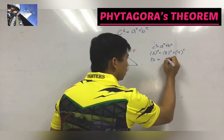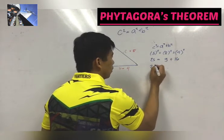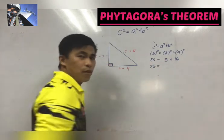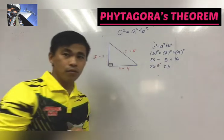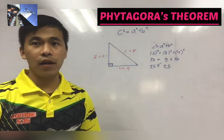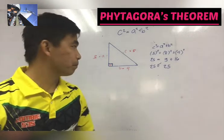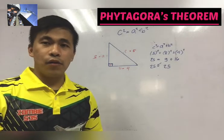So 25 is equal to the sum of 9 and 16, which will give us 25. So we just have proved that a certain triangle is a right triangle.